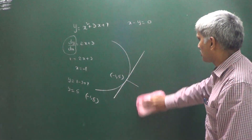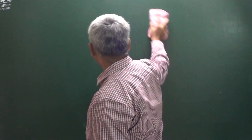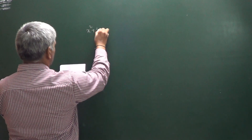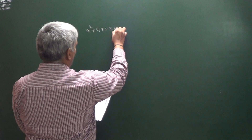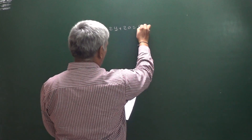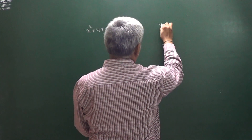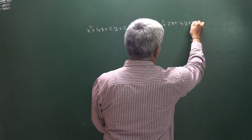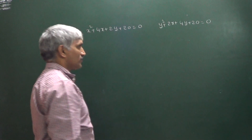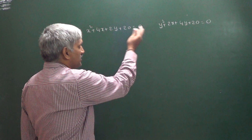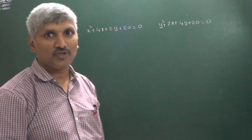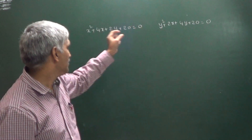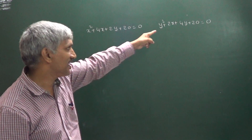Another question: two parabolas are given. Find the minimum distance between them. The first parabola is x² + 4x + 2y + 20 = 0. We have to find the minimum distance between these two parabolas. Observe that if x and y are interchanged in one, you get the other.